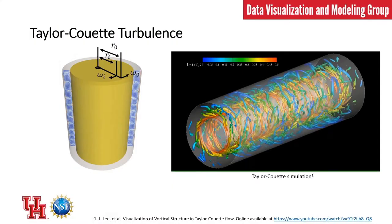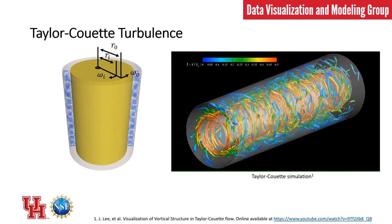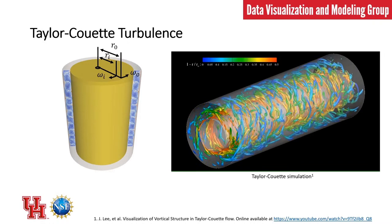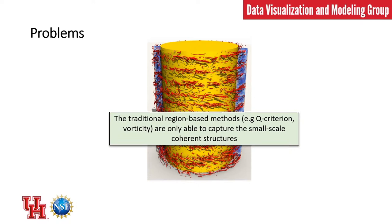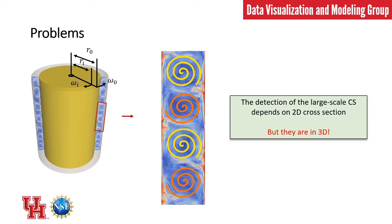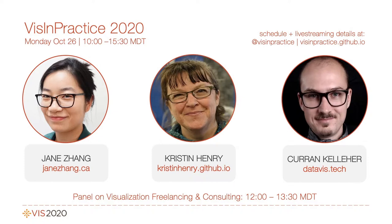Taylor-Couette flows is a turbulent fluid motion created in the gap between two rotating cylinders. Traditional region-based methods are only able to capture small-scale coherent structure. The detection of the large-scale structure depends on the 2D cross-section, which is not the true configuration. We adapt the feature-level set methods and the density approach.